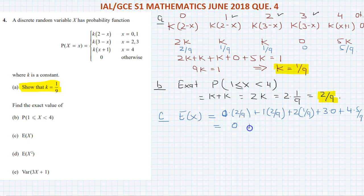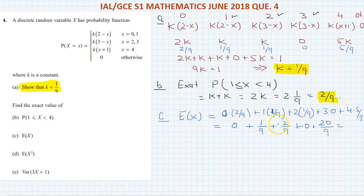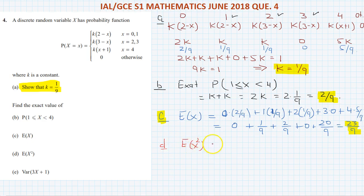Calculating: 0 plus 1/9 plus 2/9 plus 0 plus 20/9 equals 23/9. So E(X) = 23/9. That is the answer for part C.